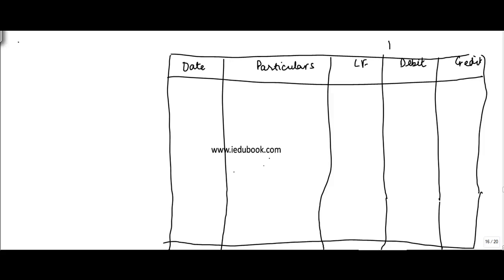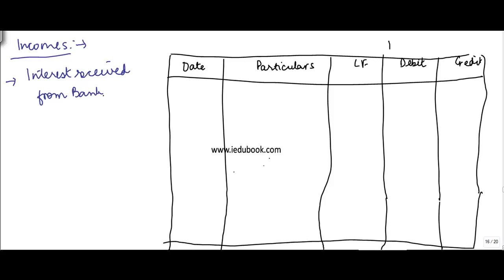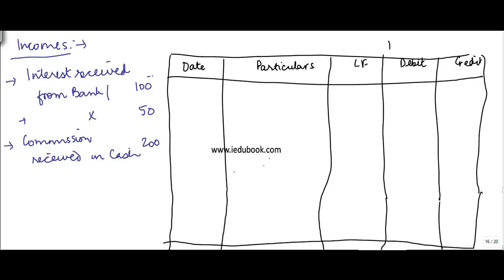Let's see how you account for incomes. You've already seen how you account for sales. Let's take a couple of income examples — interest received from bank or from X, commission received in cash, and a host of other incomes. The first thing is you received interest from the bank. When the bank gives you a credit for interest, your bank balance obviously goes up, so the two accounts involved here are bank and interest.